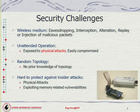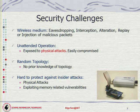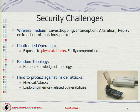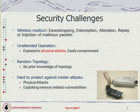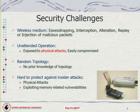Sensor nodes usually operate in an unattended environment, so they are exposed to physical attacks and can be easily compromised by an attacker without the administrator knowing. When we deploy sensor networks, most of the time we don't have prior knowledge of their topology — it's totally random. An adversary can exploit this by changing the position of nodes and leaving an area of the network empty, cutting off communication paths. This makes it hard to protect against insider attacks; once deployed, an attacker can go there, compromise a node, and use tools like a JTAG for gaining access to the node's memory, potentially identifying memory and code vulnerabilities that can lead to code injection.